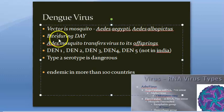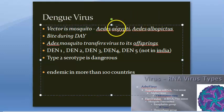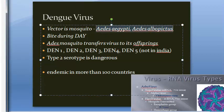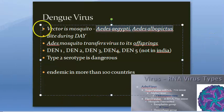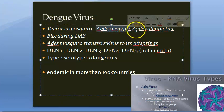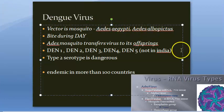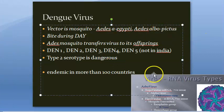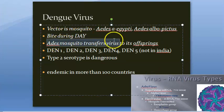The vector is the mosquito — Aedes aegypti or Aedes albopictus. These mosquitoes bite during the day, and the Aedes mosquito transfers the virus even to its offsprings, not just to us.